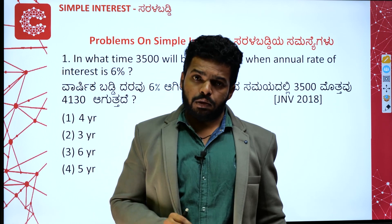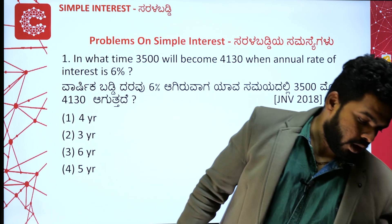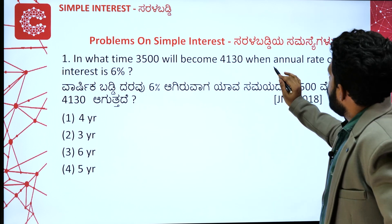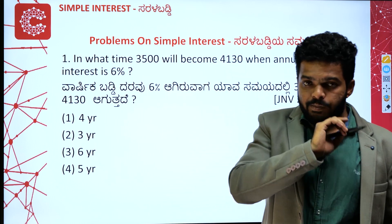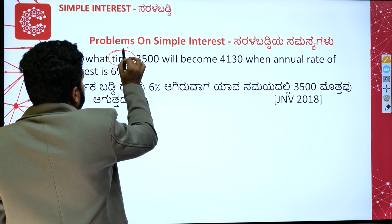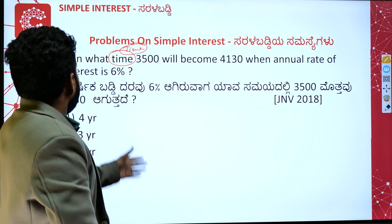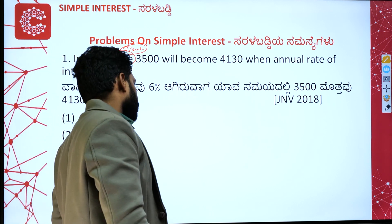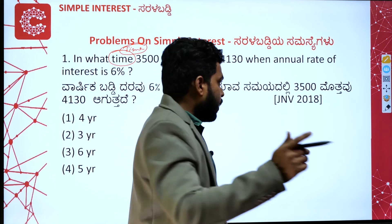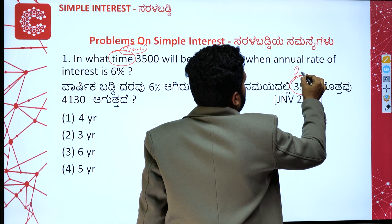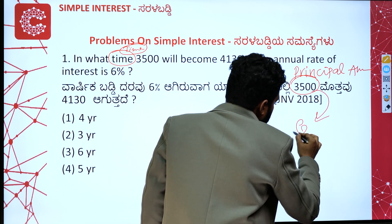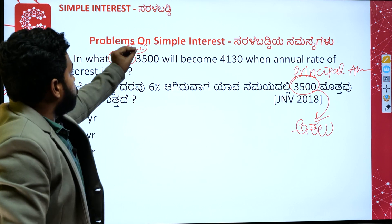Now let's solve the first question: In what time will 3500 become 4130 when the annual rate of interest is 6%? Let's identify the values. We are asked to find the time T.